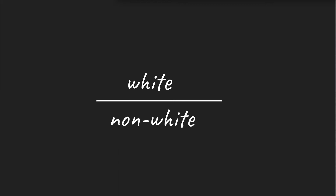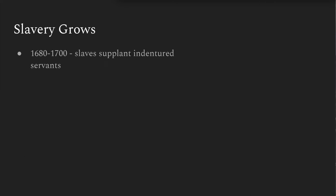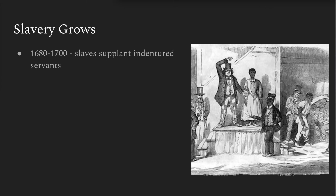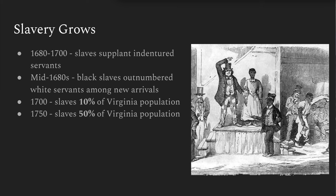Thus, Bacon's Rebellion was the political turning point for slavery in America. Between 1680 and 1700, slaves supplanted indentured servants in the Chesapeake. By the mid-1680s, just a decade after Bacon's Rebellion, black slaves outnumbered white servants among the plantation colony's new arrivals for the very first time. By 1700, slaves were 10% of Virginia's population. Fifty years later, they were approximately half.